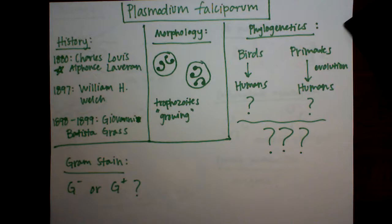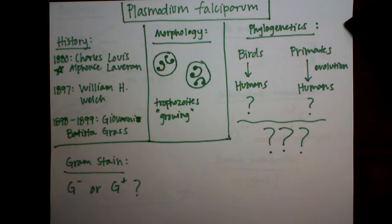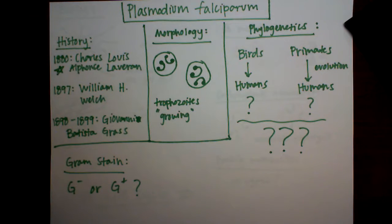Regarding the phylogenetics of Plasmodium falciparum: earlier molecular phylogenetic studies suggested it was related to two avian parasites, implying transfer from birds to humans. A later study found its closest relative was P. reichenowi, a parasite isolated from chimpanzees. The most recent work found P. falciparum in many primate species. Much research remains to determine its exact origin, but it is clear it can use both human and primate hosts.